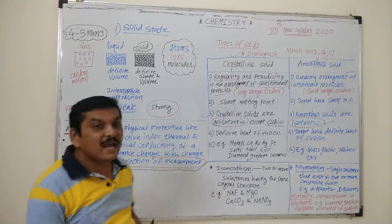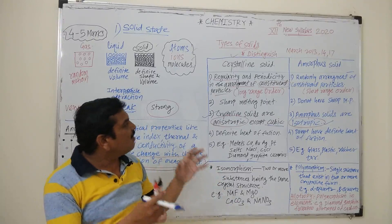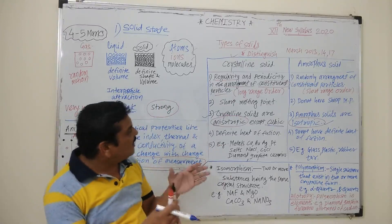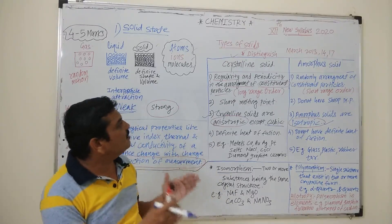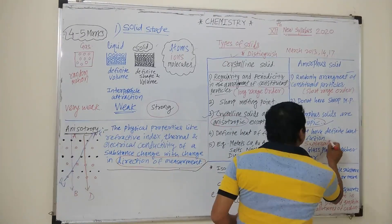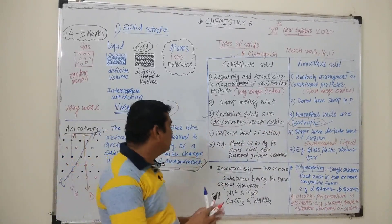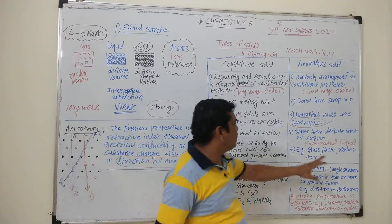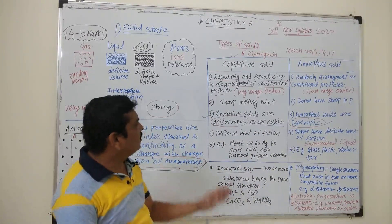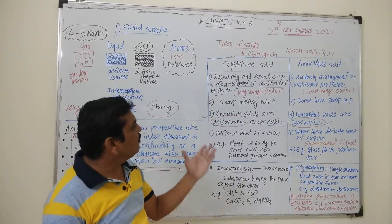Crystalline solids are considered true solids, while amorphous solids are considered supercooled liquids, meaning their constituent particles have small differences between them and they are intermediate between liquids and solids. Hence amorphous solids are not considered true solids. Examples of amorphous solids are glass, plastic, rubber, and tar. You have to remember only four key points of the distinction between crystalline and amorphous solids — primarily the difference in the arrangement of atoms, ions, and molecules, which causes differences in physical properties.